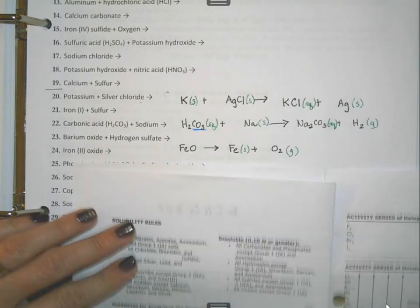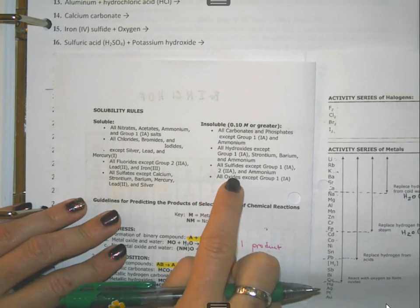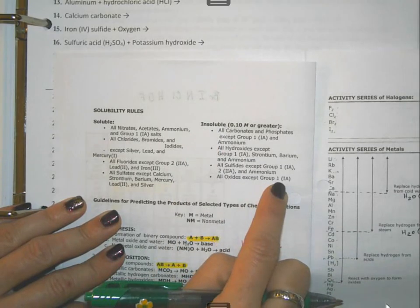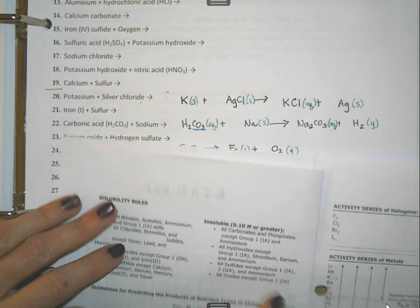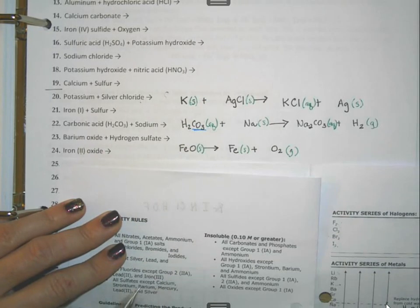FeO, I'm going to have to look it up. It's an oxide. So when we see our oxides over here, it says all oxides are insoluble except for group 1A. Well, iron is not in group 1A, which means this is going to be a solid. It will be insoluble in water.